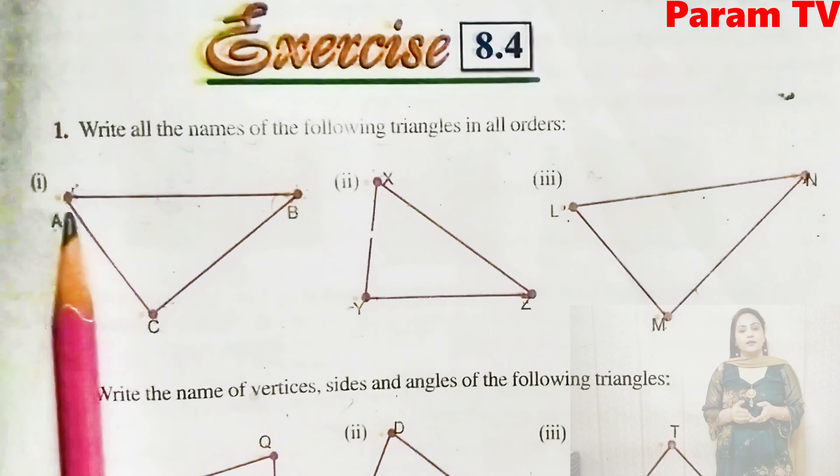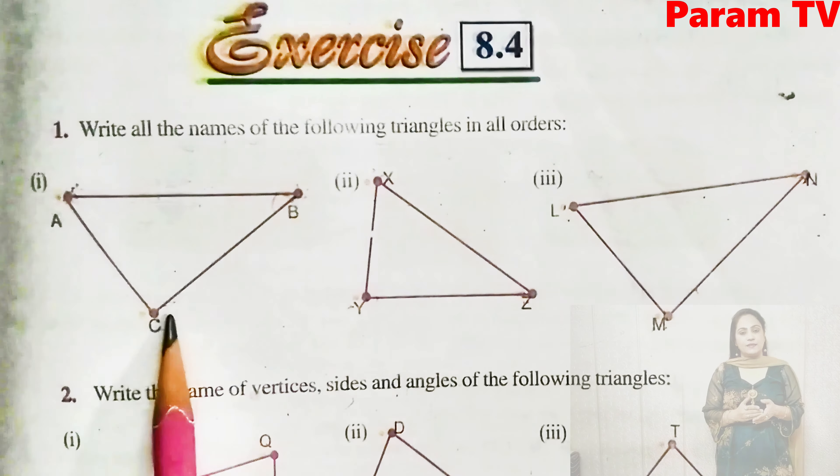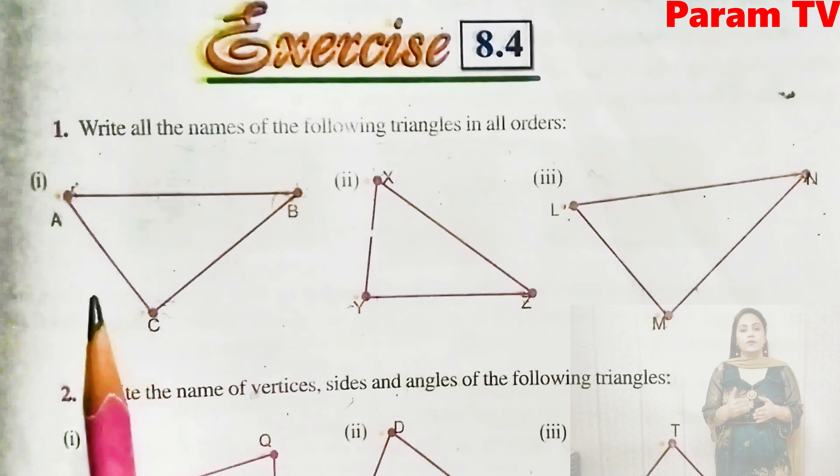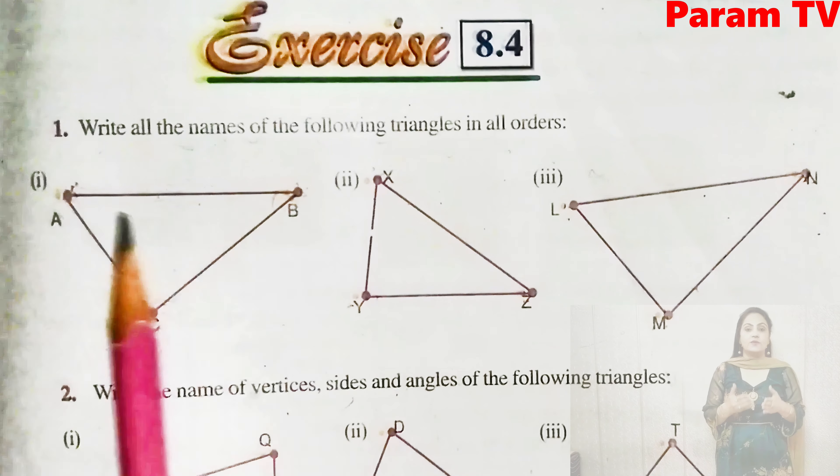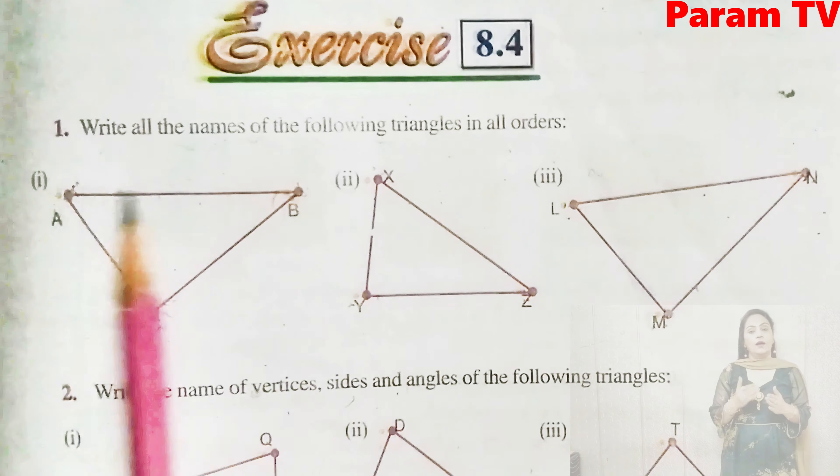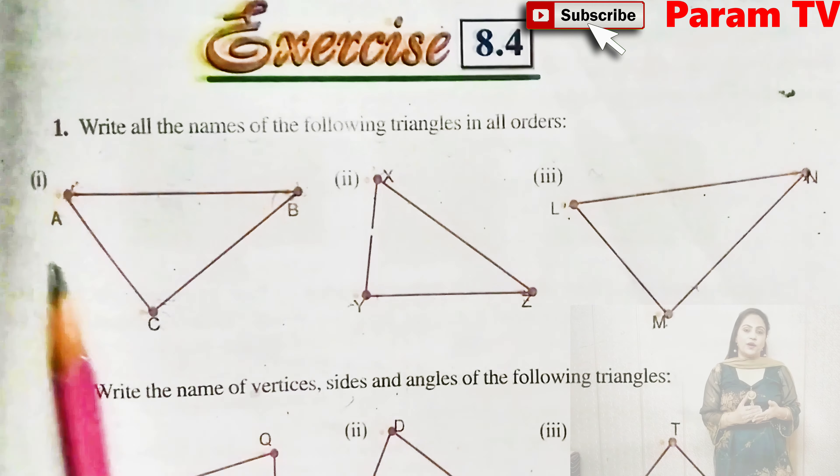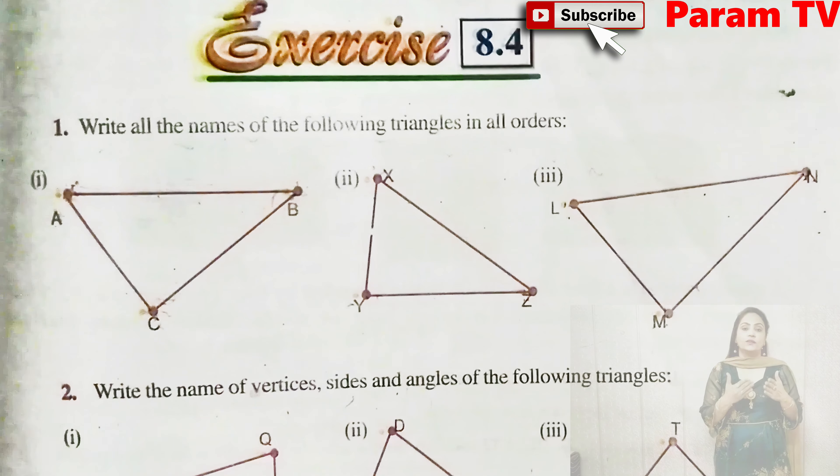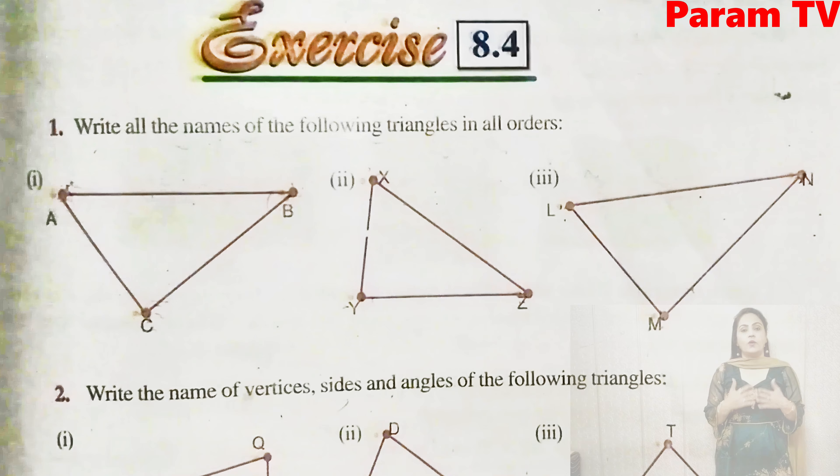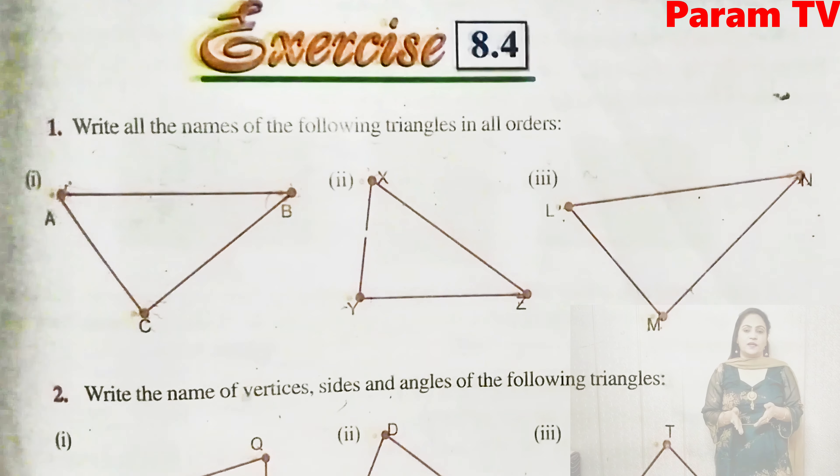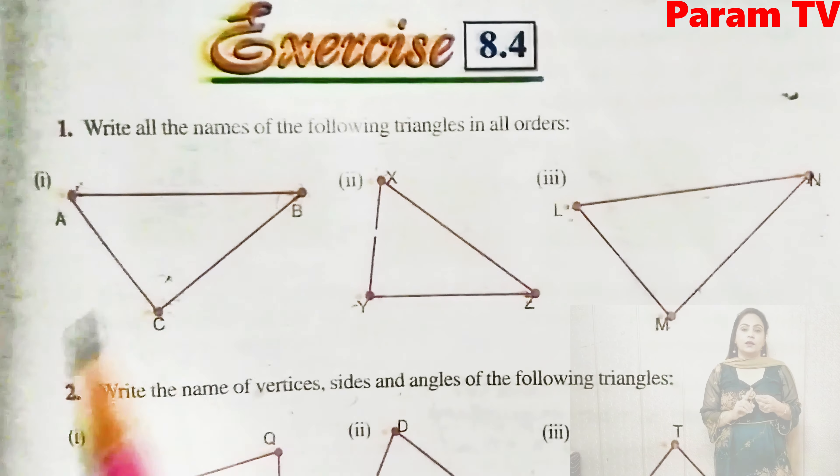See, for writing the name, we can write it A, B, C. Then we can start B, C, A. Then we can start C, A, B. Then if we started A, we can also start A. So in any order, you can write the name. We can write the name of this triangle in six possible ways.